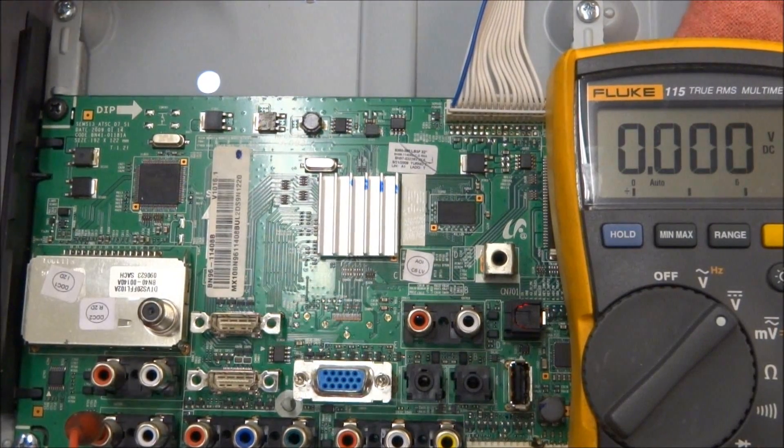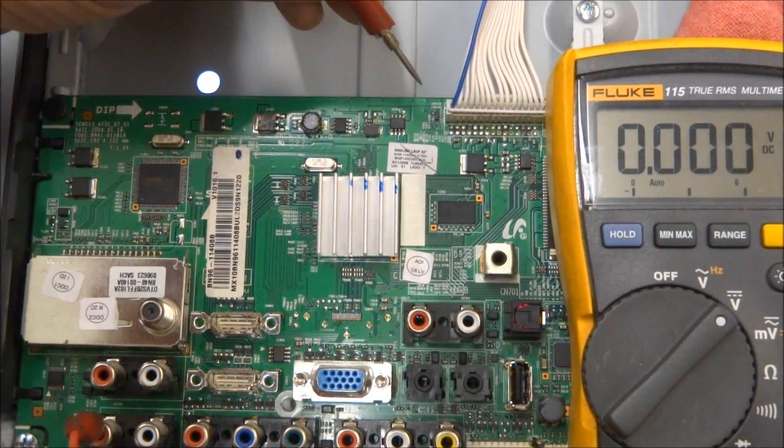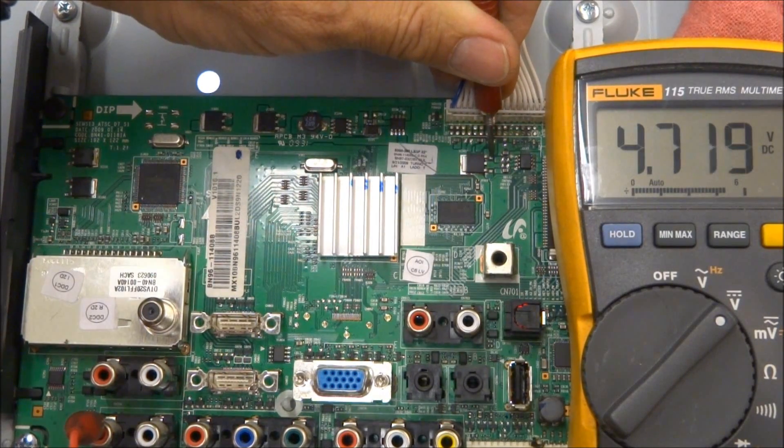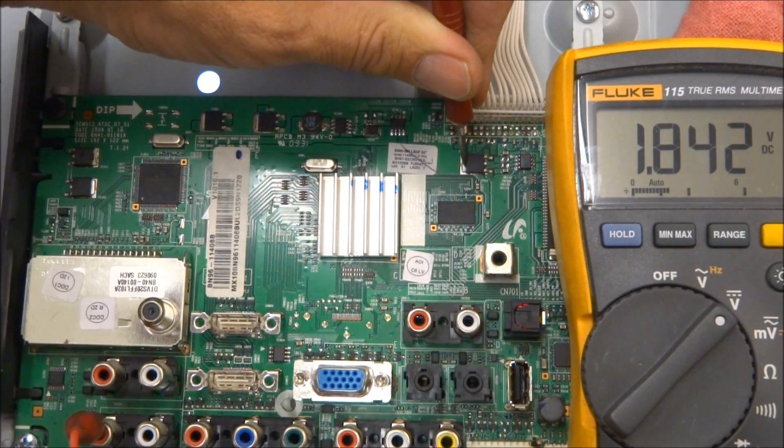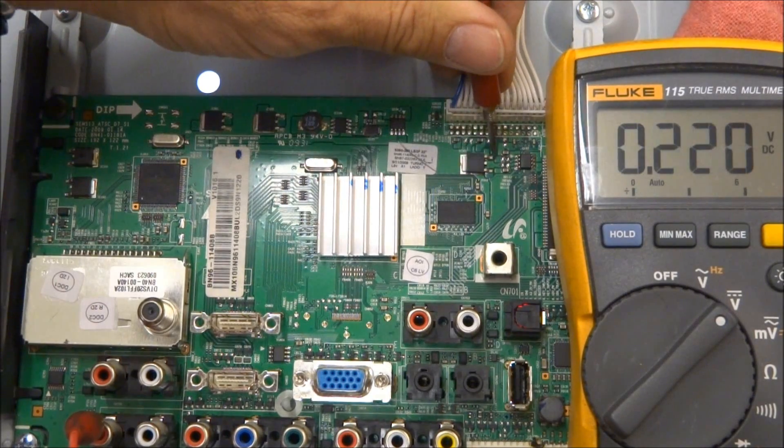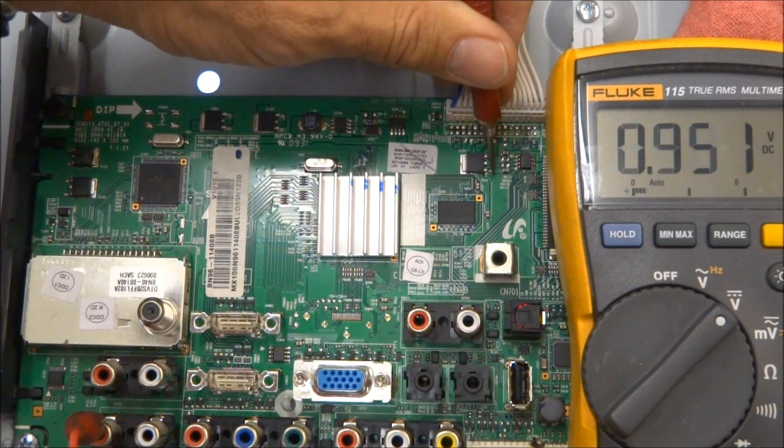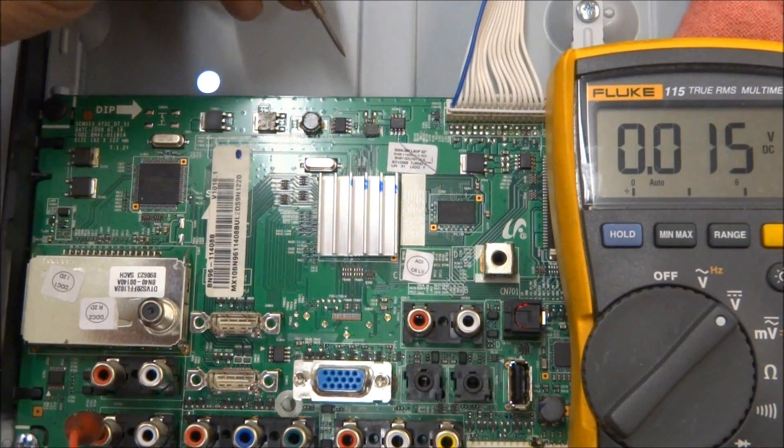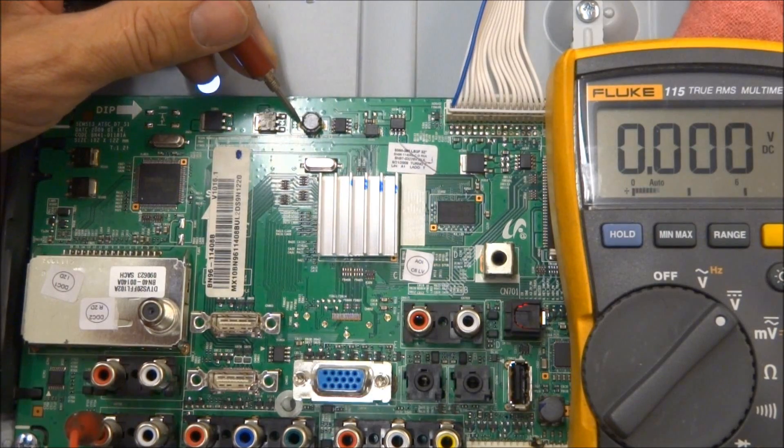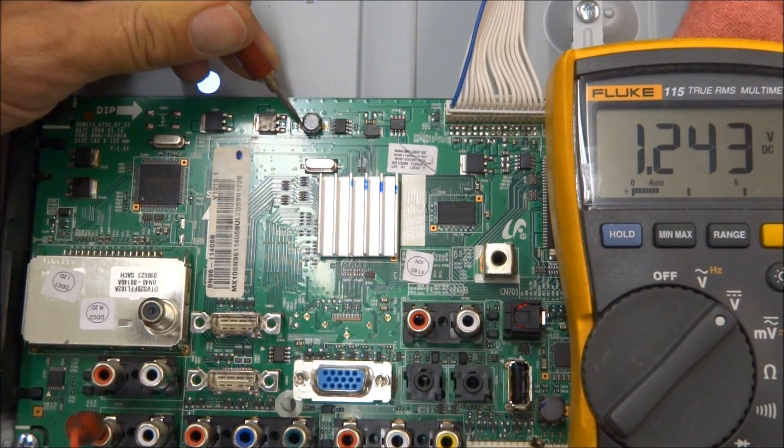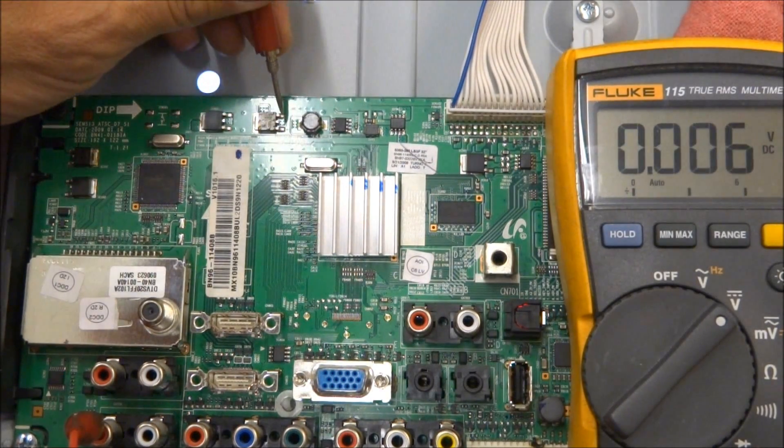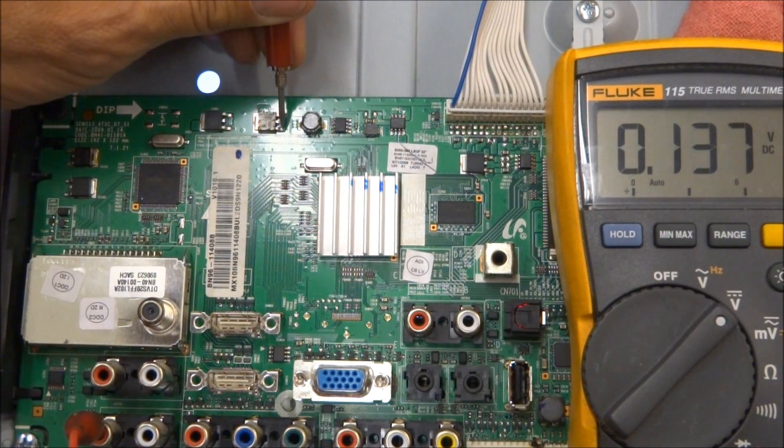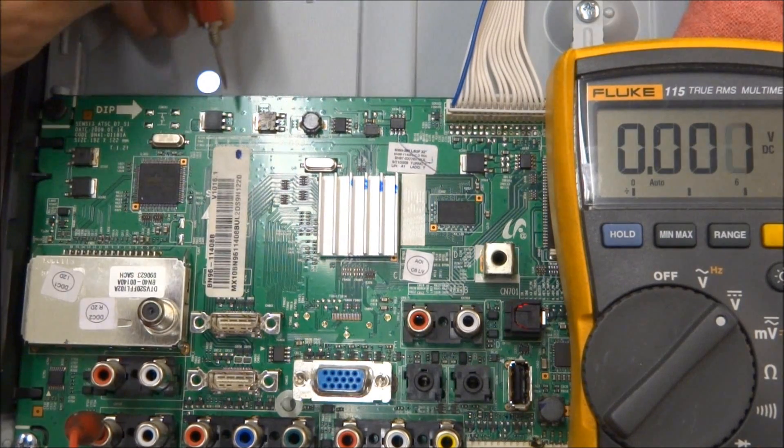And now for some quick voltages on the main board here. IC 501: 1.8 volts on the output, 4.7 on the input. The adjustment pin is 0.6 volts. You can look on L701 on this side, 1.2 volts. IC 403: 4.7 on the input, 3.3 on the output, 0 on the adjust pin. IC 601: 3.2 on the input, 1.2 on the output, 0 volts on the adjustment pin.